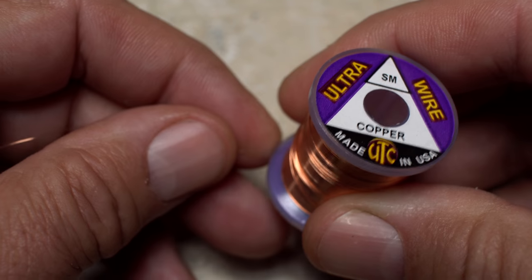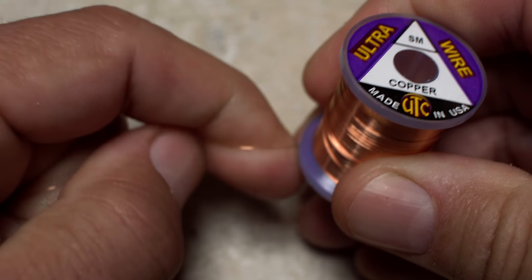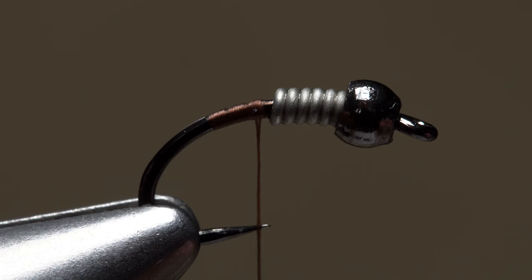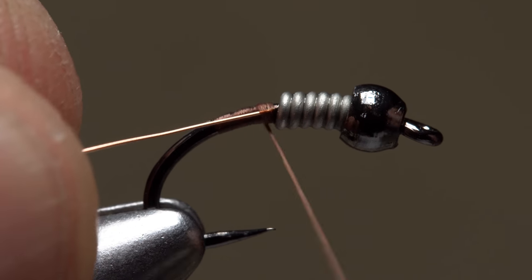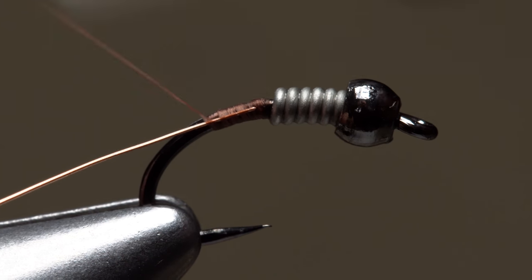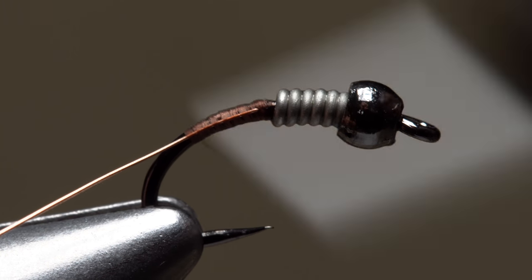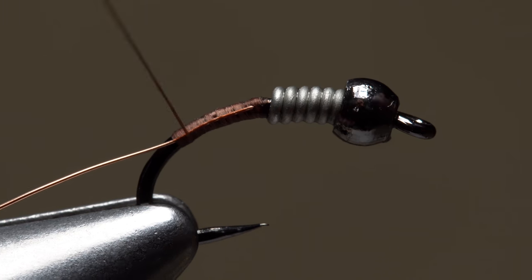Small copper ultrawire is used to rib the fly and protect the delicate pheasant tail fibers below. A 10 inch length is enough to make numerous flies. Butt the wire against the weight wraps on the near side of the hook and take wraps of tying thread to secure it. Continue a fair ways down into the bend.